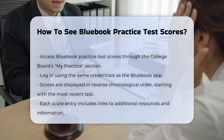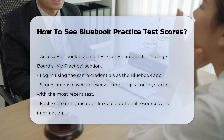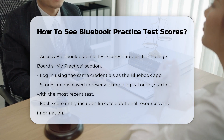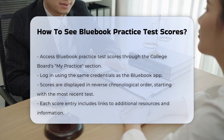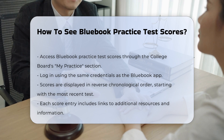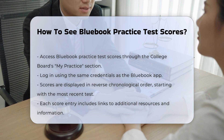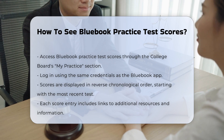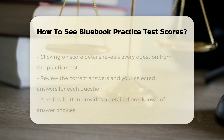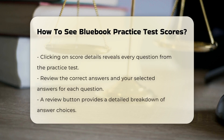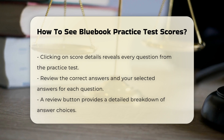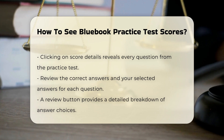To view these scores, you must log in to your College Board account using the same credentials you used for the Blue Book app. Once logged in, you will see your practice scores displayed in reverse chronological order, starting with the most recent test. Each score entry includes links to additional resources and information.